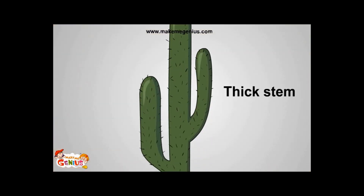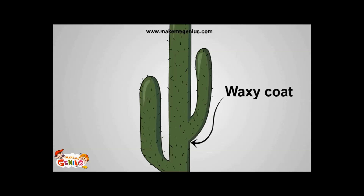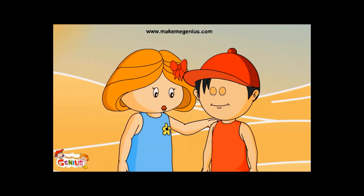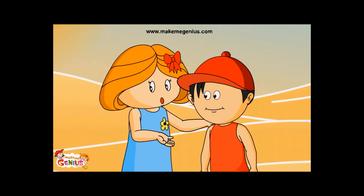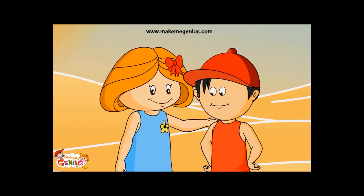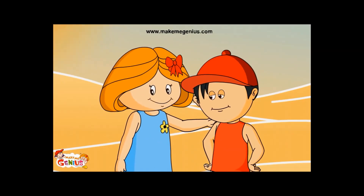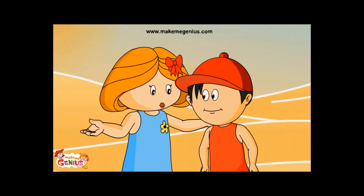Cactus's stem is also very thick. How does that help? The thick stem is useful in storing water. And also look carefully — cactus has a waxy coating. Waxy coating stops water from escaping. Plants in hot and sunny areas like deserts have a waxy coating to reduce water loss.